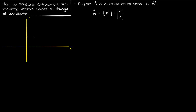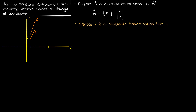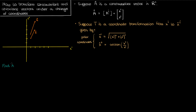If I draw my x super 1 and x super 2 axes and go to the point 1 comma 2, then my vector A will be pointing 1 unit to the right and 2 units up. If I go to 1 comma 3, it'll be pointing 1 unit to the right and 3 units up, and so on. So let's say now that we have a coordinate transformation T that takes us from the unbarred coordinate system x super i to the barred coordinate system with coordinates x super i bar. The equations of this coordinate change are as follows, and you'll notice this is basically a transformation from Cartesian to polar coordinates. Our goal is to find the version of A in the barred coordinate system by transforming the components of A into their barred counterparts.